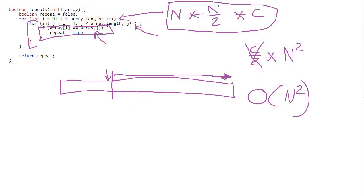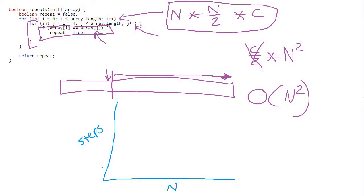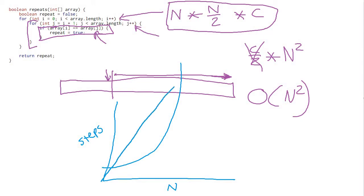Quadratic algorithms scale much more poorly than linear ones. If you remember from algebra, n² traces a parabola — as n increases, the number of steps goes up faster than linearly. Eventually a linear algorithm, even with a steep slope, will outperform a quadratic one, which continues growing at a much, much steeper rate.